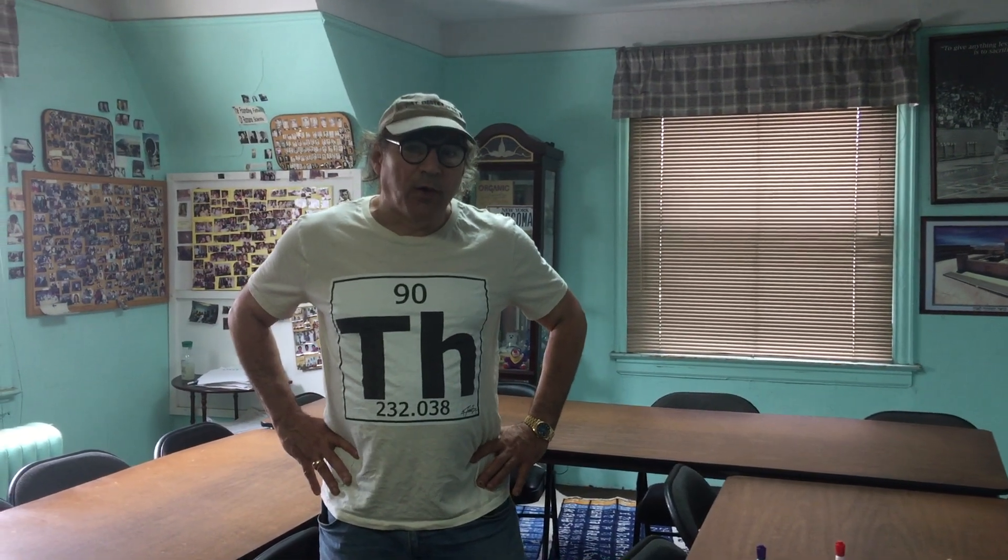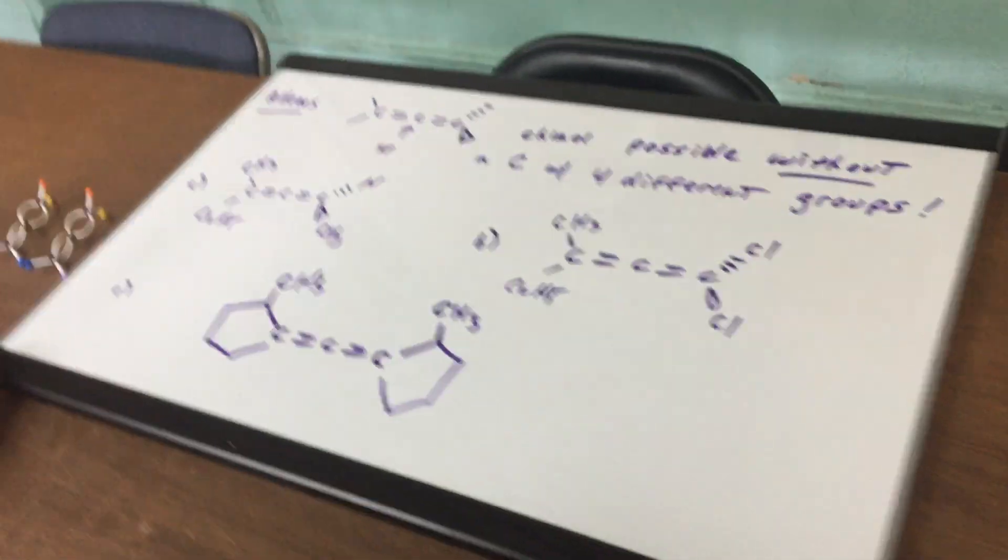Now normally a carbon that has four different groups to it is called a chiral carbon and if there's four different groups and there's no symmetry then we would most likely say that the molecule is optically active and therefore will have an enantiomer. I want to show you an exception to the rule. There's always exceptions but one exception is a compound we call an allene.